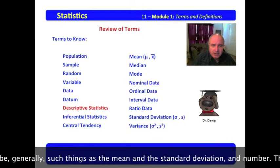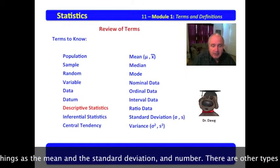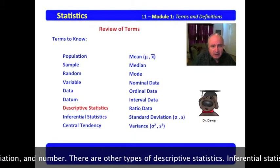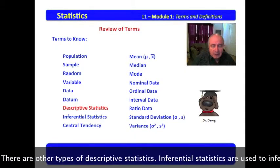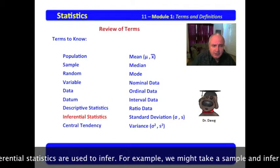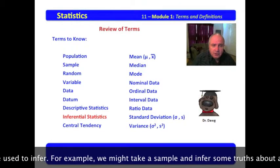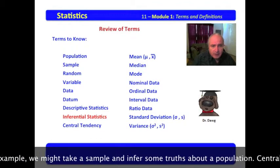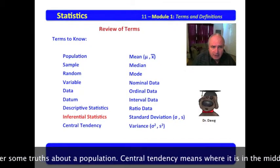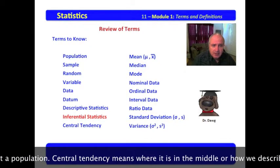Descriptive statistics are used to describe, generally such things as the mean and the standard deviation, the number, and there are other types of descriptive statistics. Inferential statistics are used to infer. For example, we might take a sample and infer some truths about a population.